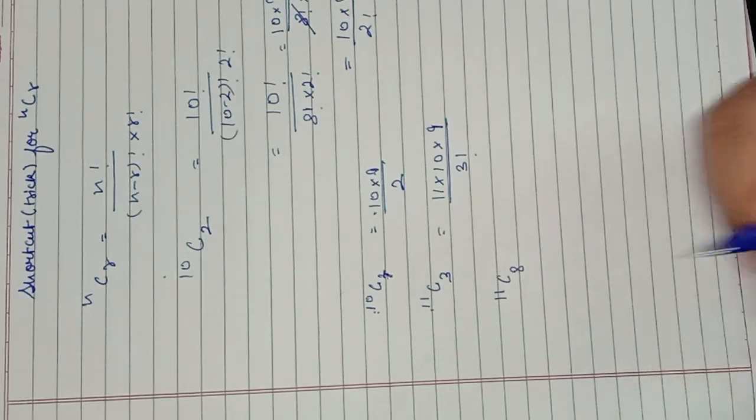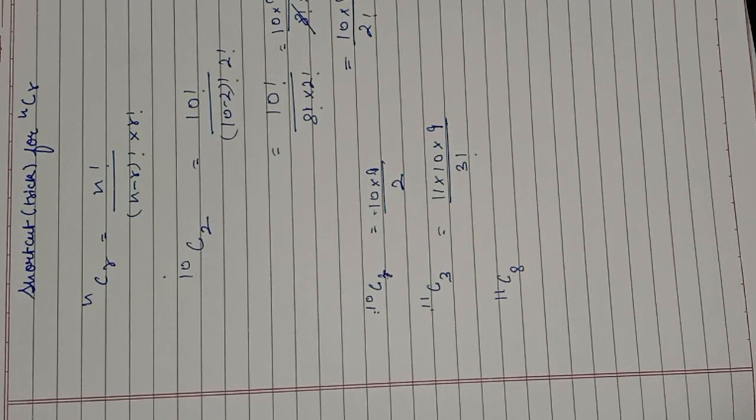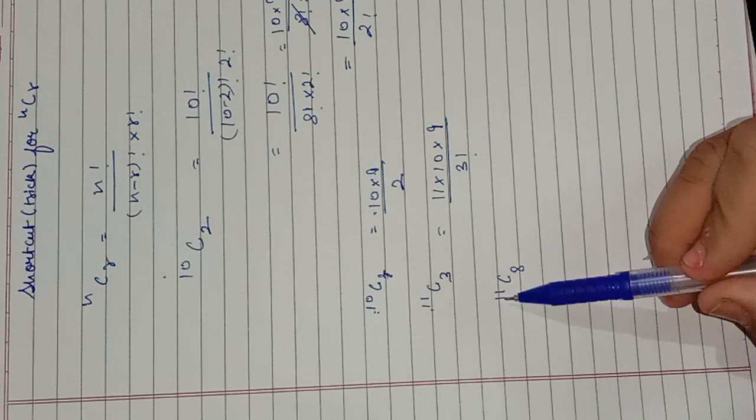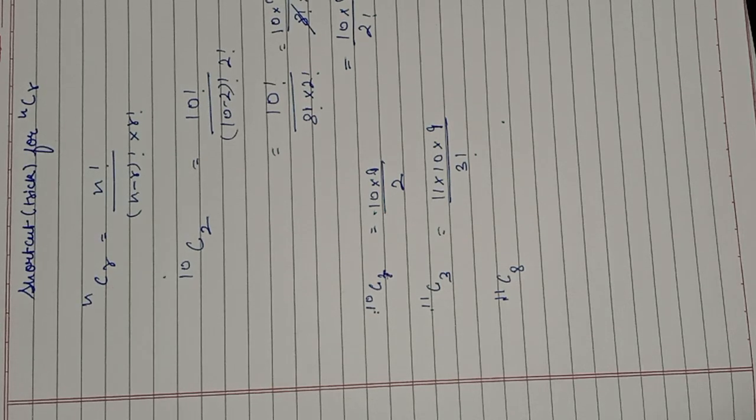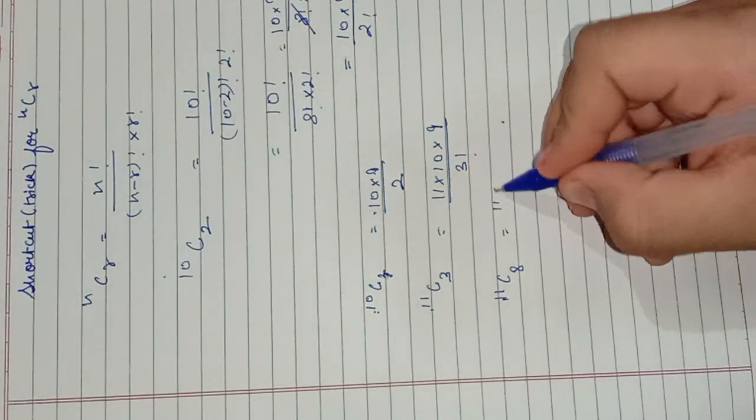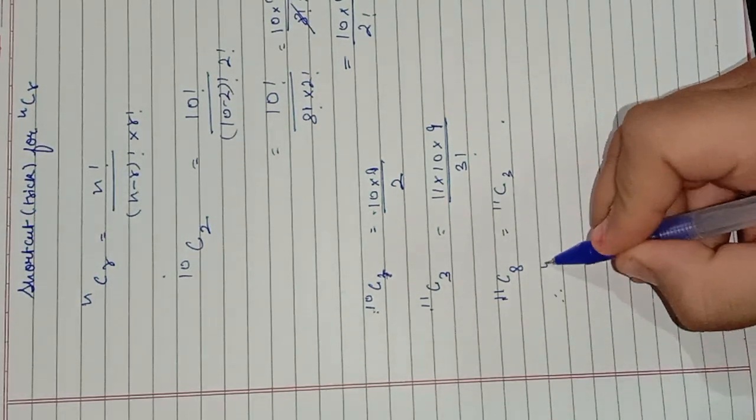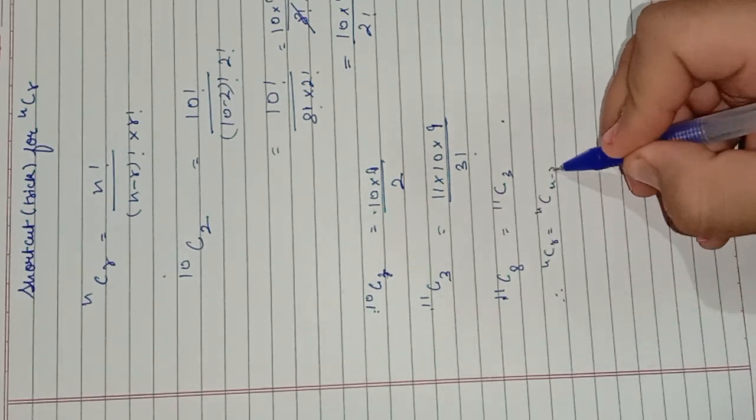Like 11C8, here according to the trick, we have to write that 11 from 8 numbers upon 8 factorial. But we can write 11C3 because we know nCr is equal to nCn-r.